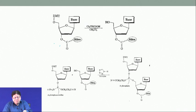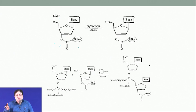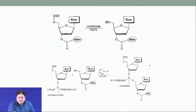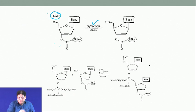As described, the 3-prime OH is attached to silica, the base is protected, and the 5-prime OH is protected as DMT. The first step is to remove the DMT group. DMT — dimethoxytrityl — falls off in the presence of an acid. Trichloroacetic acid or dichloroacetic acid is used, because halogen substituents on the alpha carbon of acetic acid increase the acid strength.